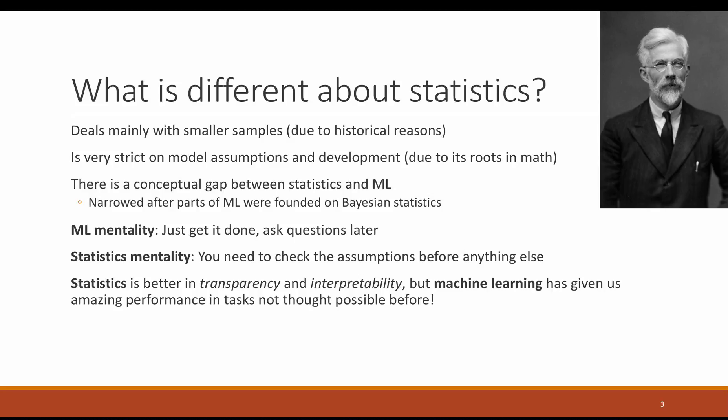The main difference between statistics and machine learning is that statistics tend to be much more stricter on model assumptions and development. There's a huge conceptual gap between the two disciplines. Statistics was born in mathematic departments, and it's very important, according to a mathematician's way of thinking, to make sure that any assumptions you make are sound and correct. Whereas machine learning was mostly created in computer science departments and follows more of an engineer's mentality - make something work, and you can ask questions later.